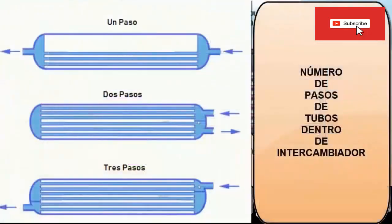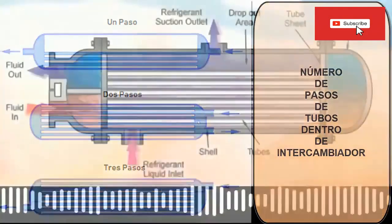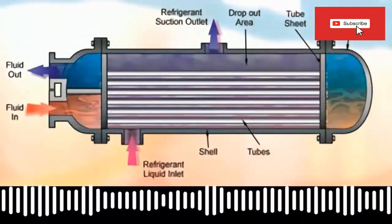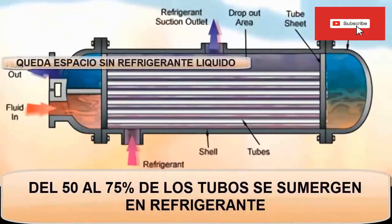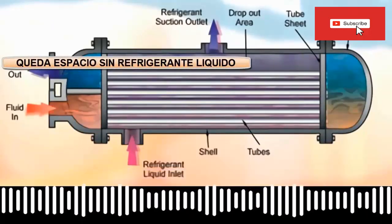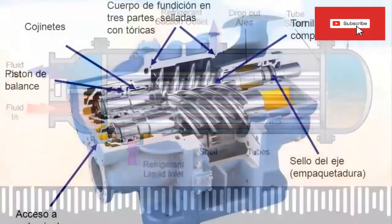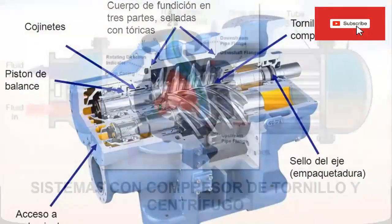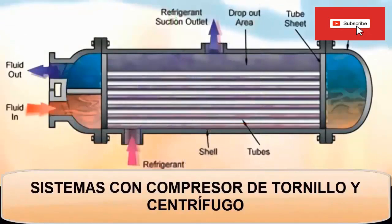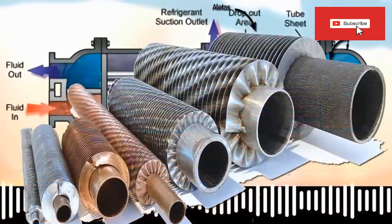7. Flooded shell and tube evaporators can be single-pass or multi-pass pipe type, depending on pressure drop and velocity. 8. Approximately 50% to 75% of the tubes are immersed in liquid refrigerant, with the space above providing a margin for the vapor generated through the evaporation of the liquid below. 9. This type of evaporator is most often used with screw or centrifugal compressors.